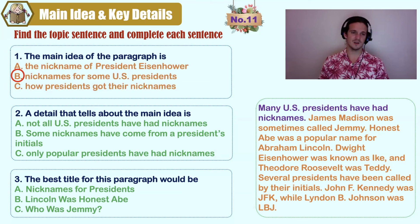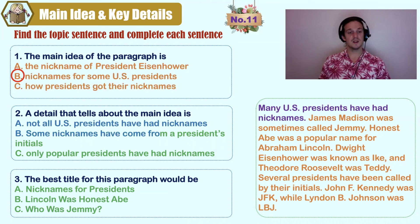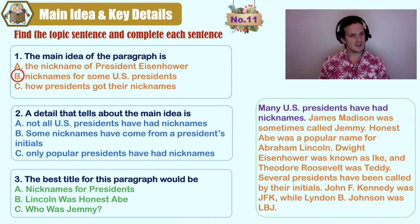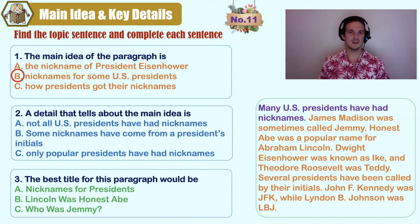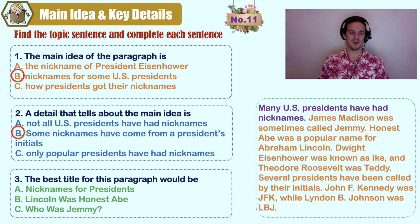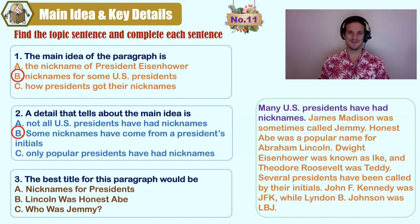What detail do you find in the story? A) not all U.S. presidents have had nicknames, B) some nicknames have come from a president's initials, C) only popular presidents have had nicknames. It doesn't say C. A is implied but not a stated detail. The answer is B. And the best title? A) Nicknames for presidents, B) Lincoln was Honest Abe, C) who was Jemmy? A is definitely our best bet.